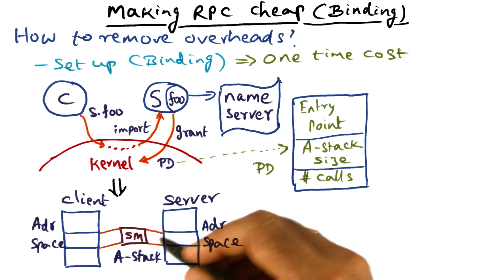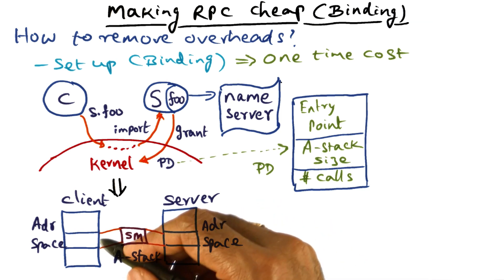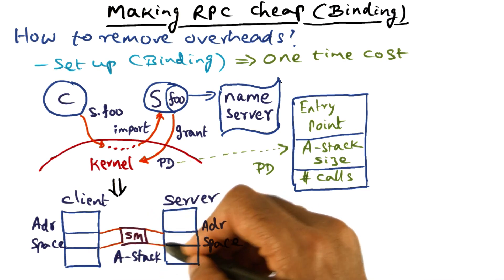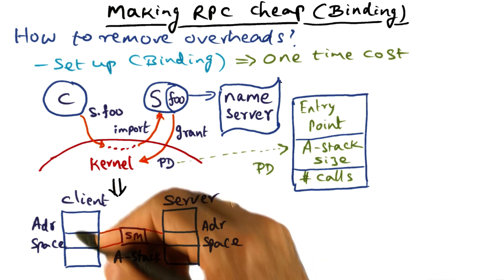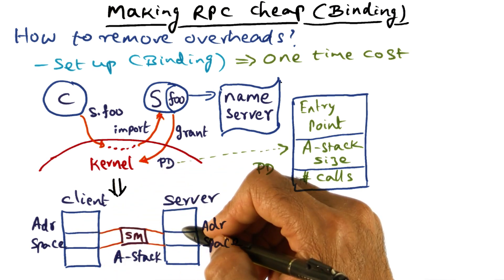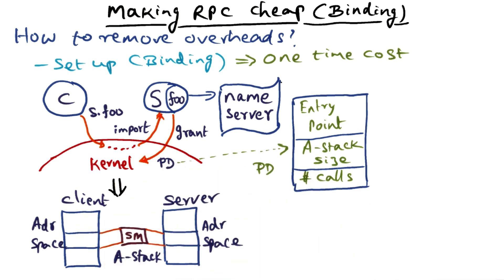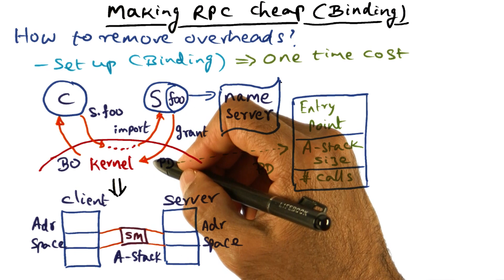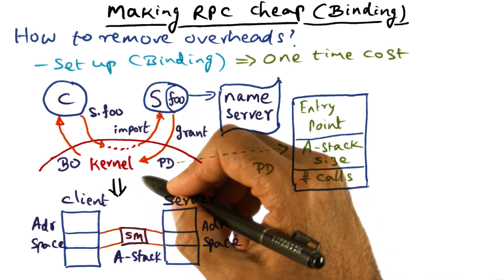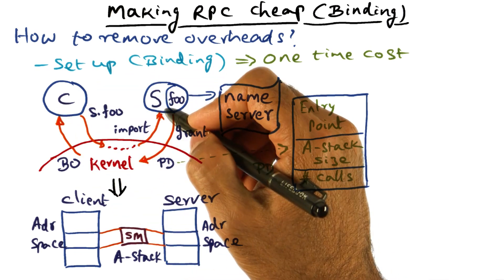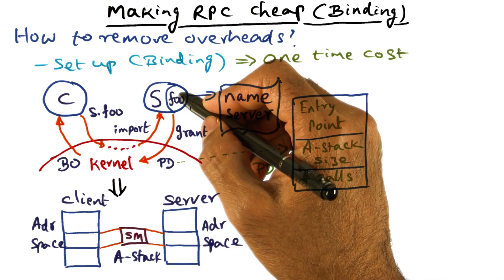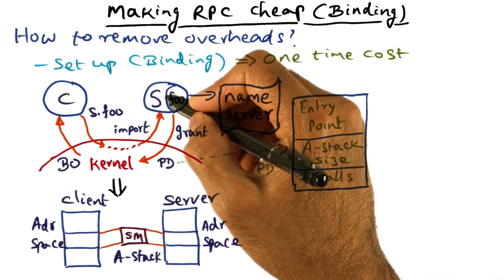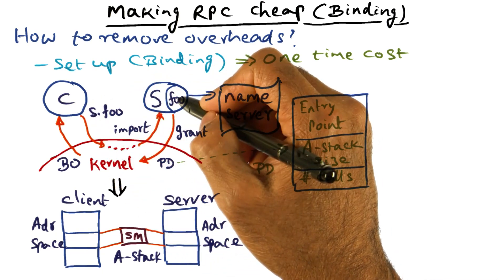The client and the server can directly communicate the arguments and the results back and forth using this A stack. That's the reason it's called A stack — it stands for argument stack. It is available for communication between the client and the server. The kernel is now done with all the work it has to do in order to set up this remote procedure call mechanism between the caller (the client) and the callee (the server).